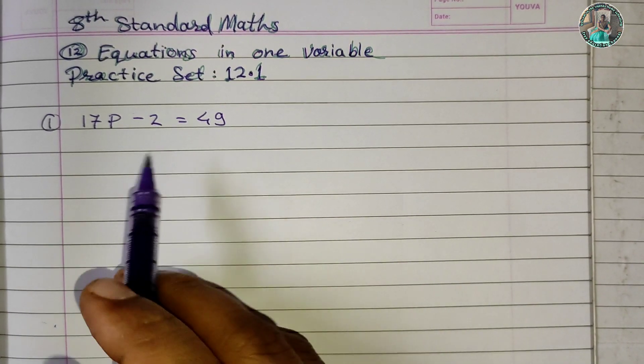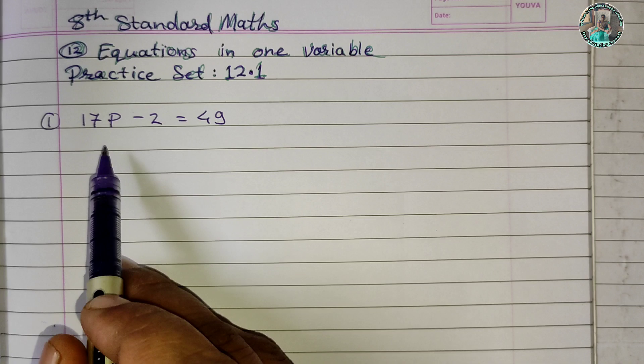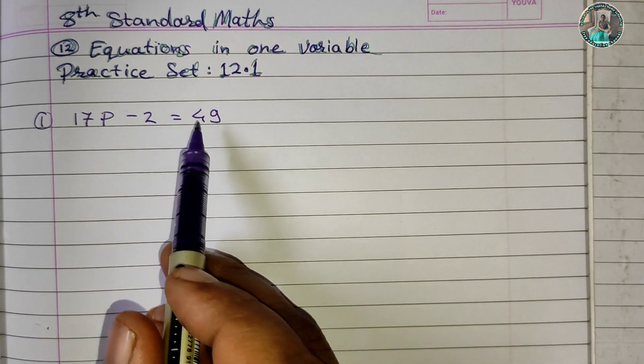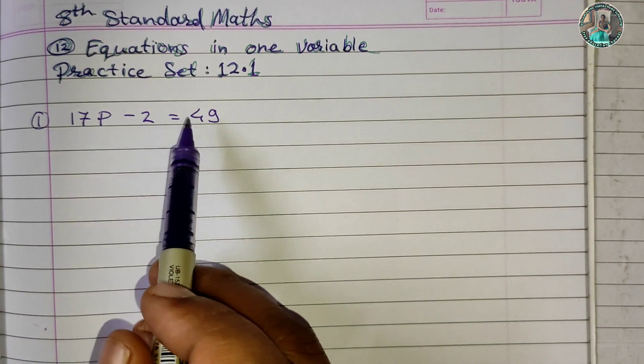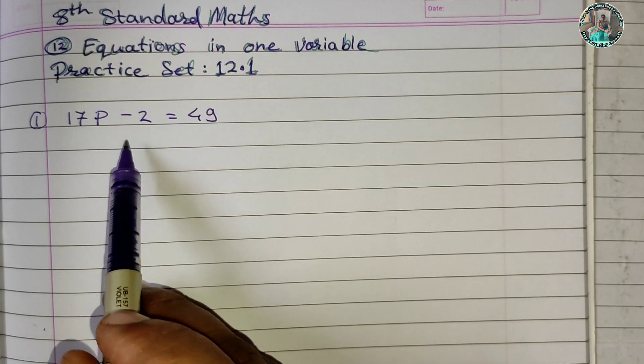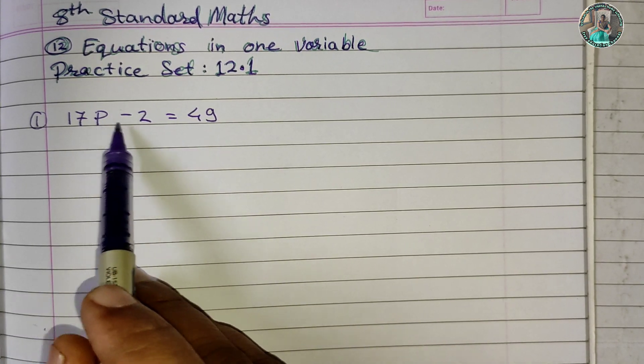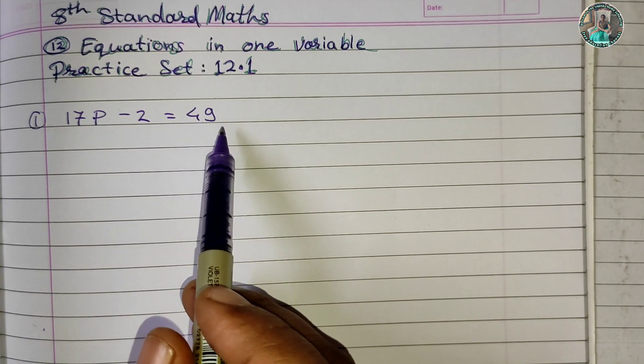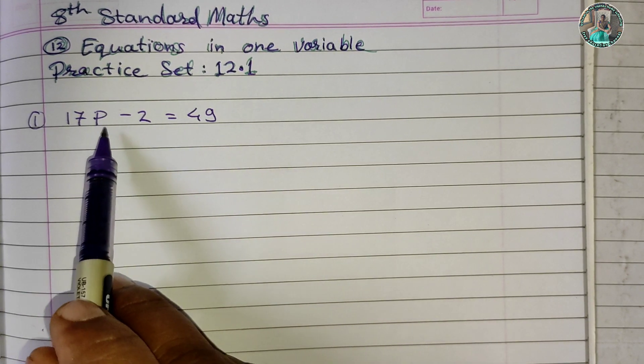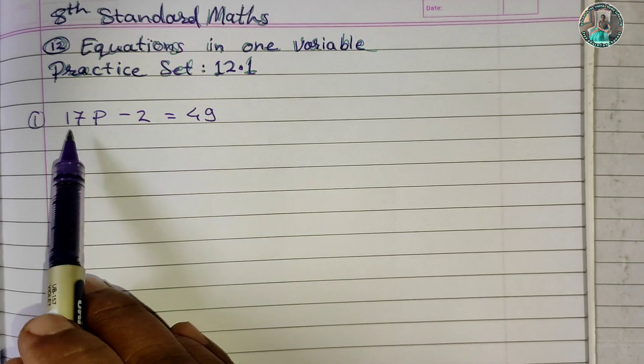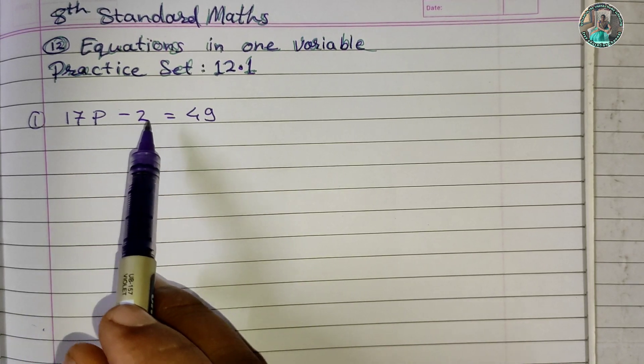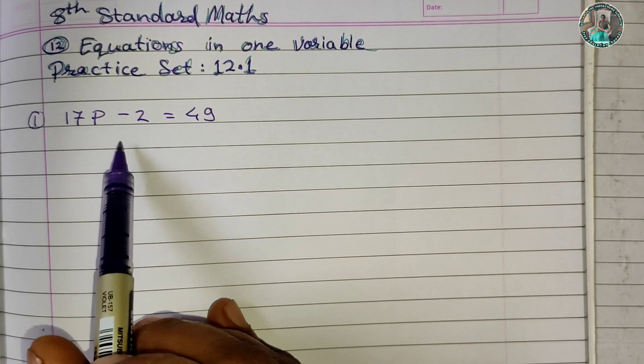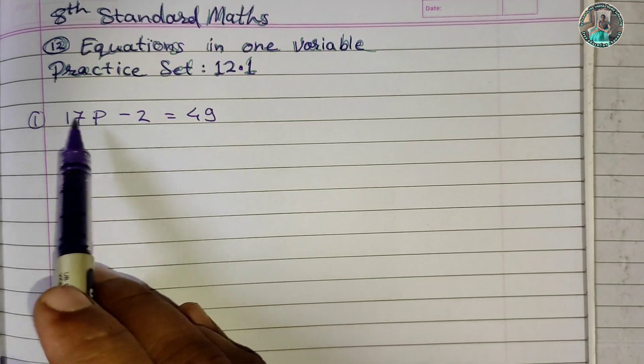The equation is 17p - 2 = 49. We will find the value of p. The left side has 17p - 2, and the right side is 49. To isolate p, we need to remove the -2 from the left side.